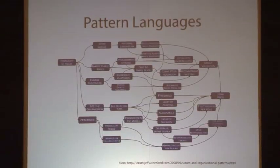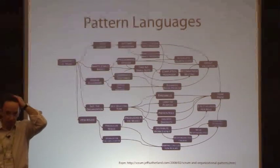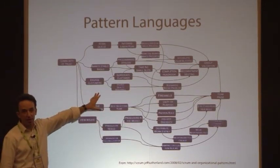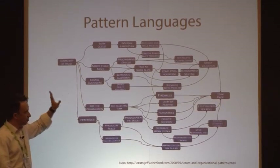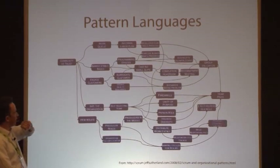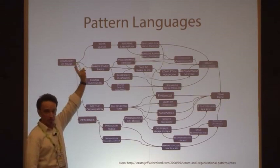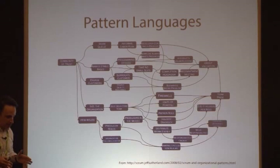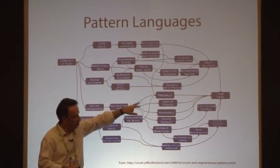Let's look at what a pattern language is. I took this from Jeff Sutherland's website - he's one of the co-creators of Scrum, and he was describing Scrum as a pattern language using one of the languages from Coplien's book. A pattern language basically says: if you are thinking about this pattern, maybe you should have a look at the connected ones in this direction - you start somewhere with your problem and explore from there.